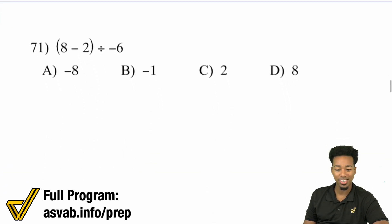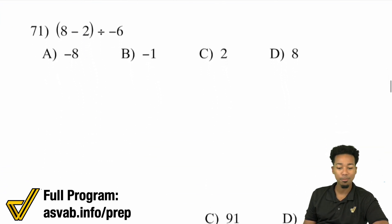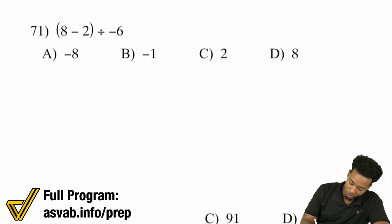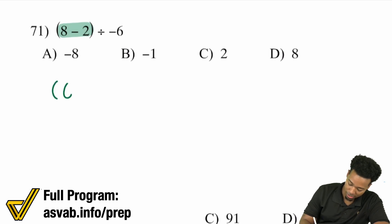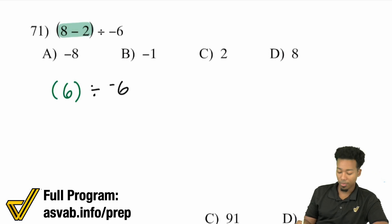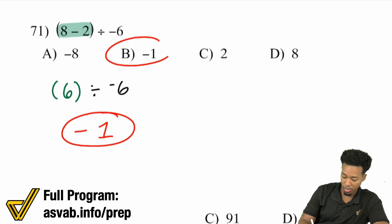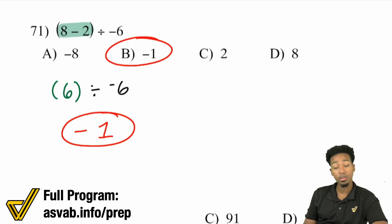Number 71: keep pausing it so you can try it out and then press play so I can do it with you. We have (8 minus 2) divided by negative 6. 8 minus 2 is going to end up being 6. Then we divide that by negative 6 — a positive divided by a negative will give you a negative. 6 divided by 6 is 1, so negative 1 would be the answer.